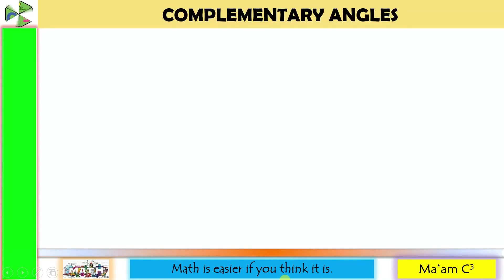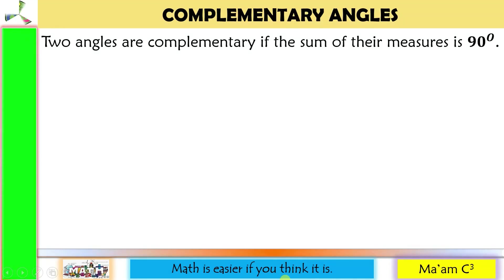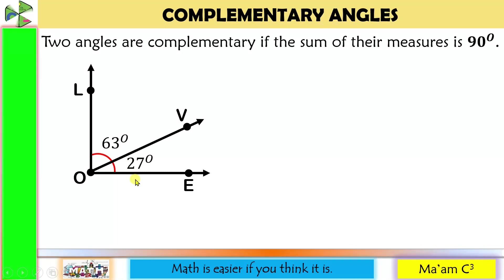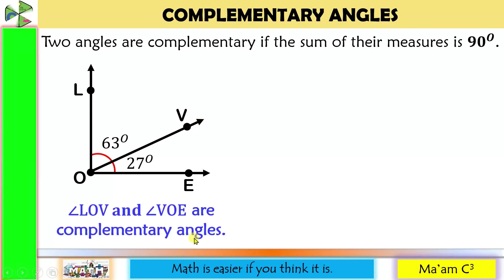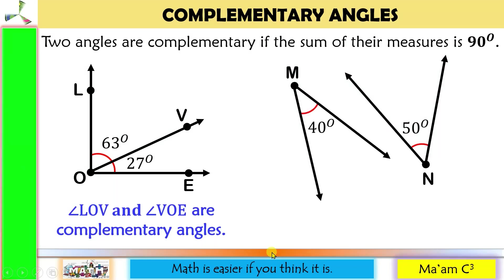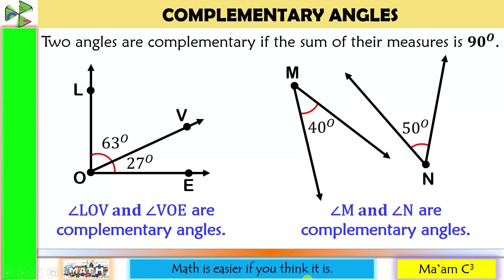The next pair is complementary angles. Two angles are complementary if the sum of their measures is 90 degrees. For example, 63 plus 27 is equal to 90. Therefore, angle LOV and angle VOE are complementary angles. Another example: 40 plus 50 is equal to 90. Hence, angle M and angle N are complementary angles.